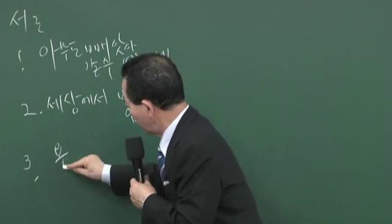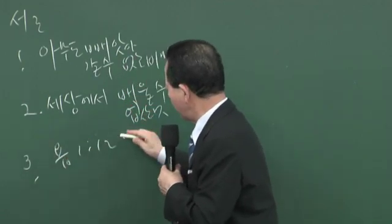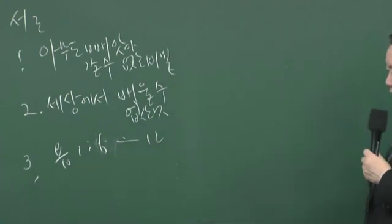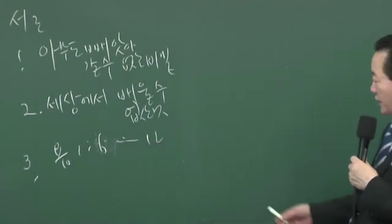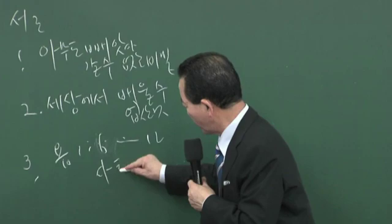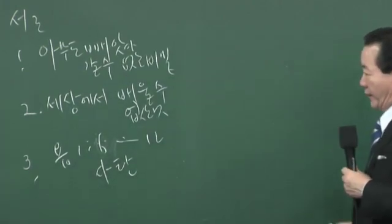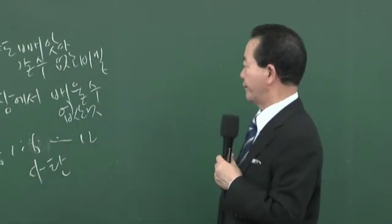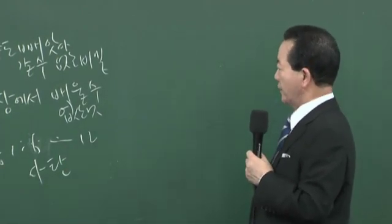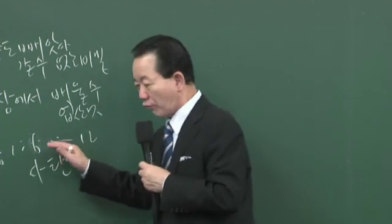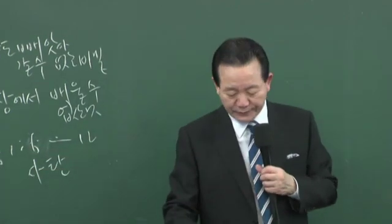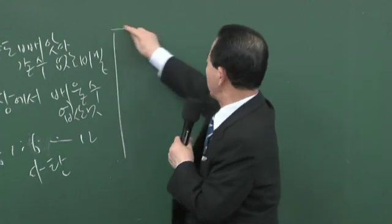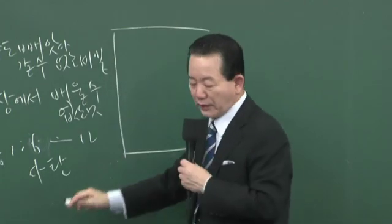Today in Job chapter 1 verses 6-12, Satan still controls and attacks the world. Satan has control of the world and attacks believers, attacking Job greatly. Remnants must possess the answer to overcome these things.